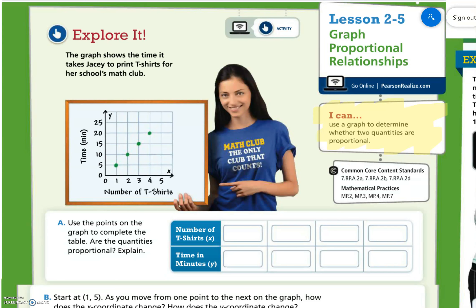Let's explore it. The graph shows the time it takes JC to print t-shirts for her school's math club. Use the points on the graph to complete the table. Are the quantities proportional? Explain.